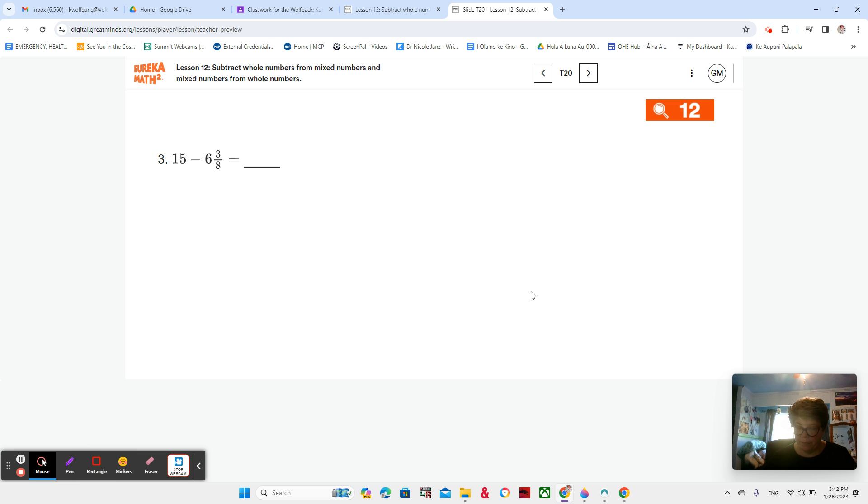All right. Number 3, 15 minus 6 and 5 eighths. So here we have a whole number minus a mixed number. So once again, this is the more complicated one, right? If that's a way for you to think about it. We're going to break our 6 and 3 eighths into 6 and 3 eighths. Just kind of separate them out and make sure that we use both of those parts.